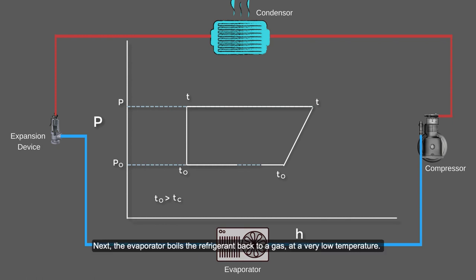Next, the evaporator boils the refrigerant back to a gas at a very low temperature. The change from liquid to gas absorbs the heat from the evaporator, which in turn removes the heat from the insulated refrigeration box, thereby lowering its temperature.